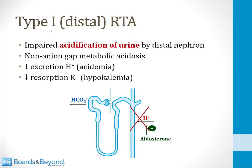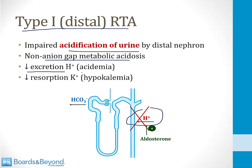Now let's talk about our next renal tubular acidosis — that's the type 1, or distal renal tubular acidosis. The problem in this condition is that the distal nephron cannot secrete protons into the urine; in other words, the nephron cannot acidify the urine. This leads to a non-anion gap metabolic acidosis, just like all the RTAs. Because there's less excretion of acid, it leads to acidemia, and whenever there's less excretion of acid in the distal nephron, there's less resorption of potassium, and therefore this leads to hypokalemia.